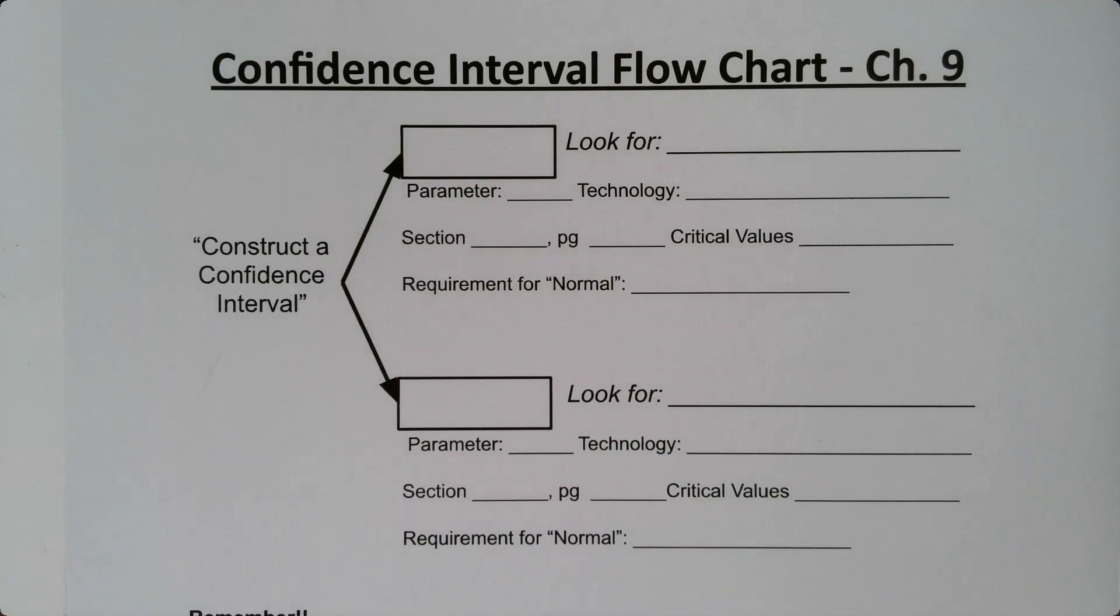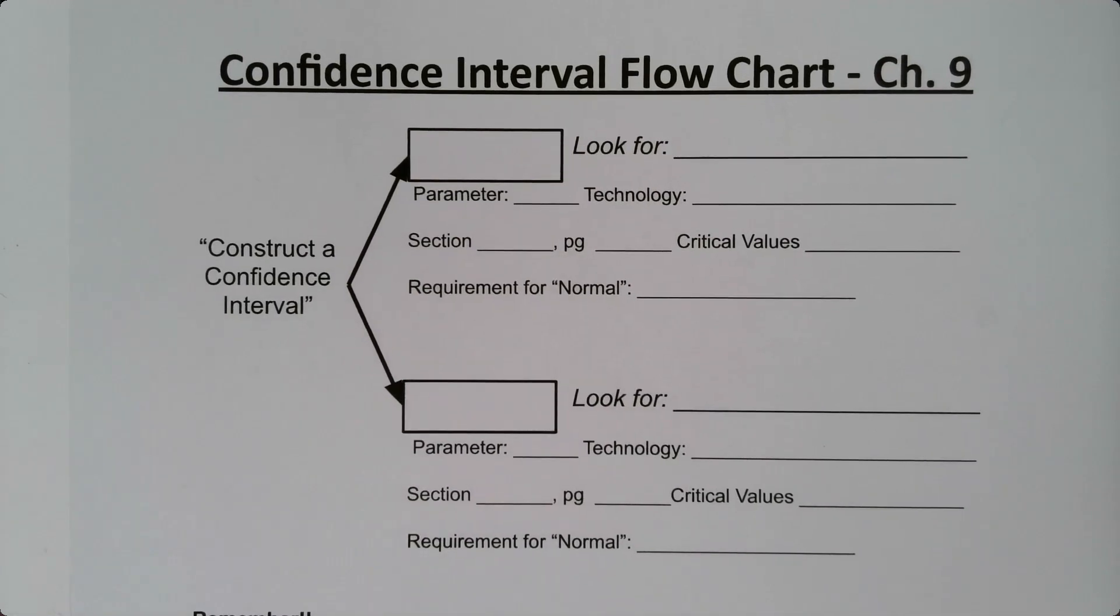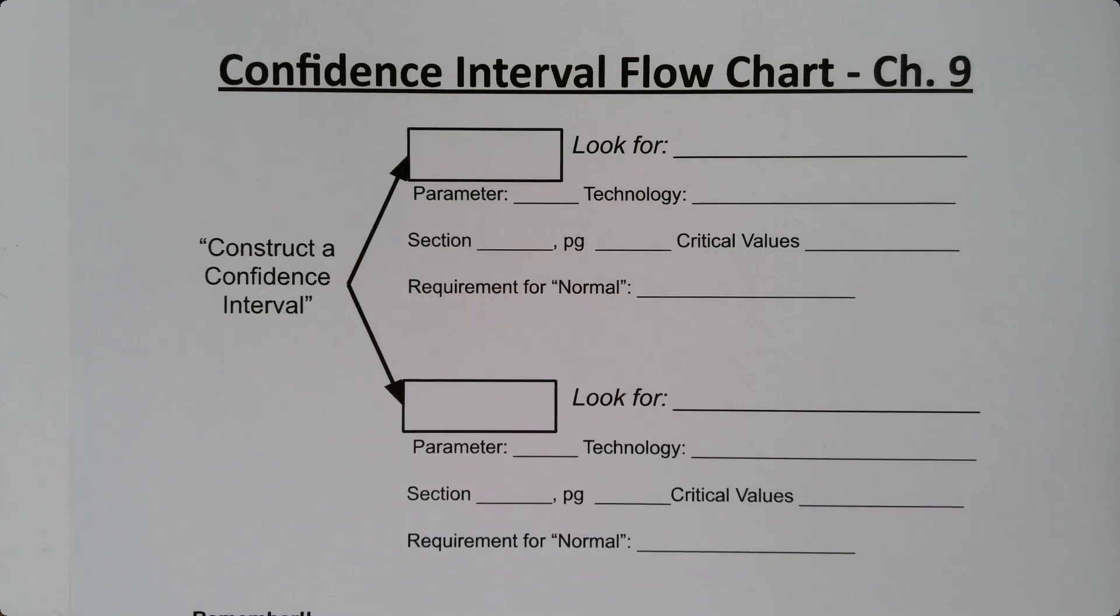One of the hardest parts about chapter 9 and chapter 10 and 11 for that matter is knowing when to do what. There are so many different formulas, so many different things we're being asked to do. How can we tell what path to choose? That's the key.